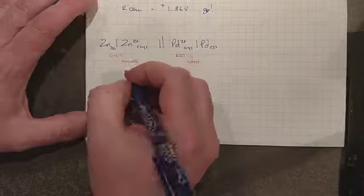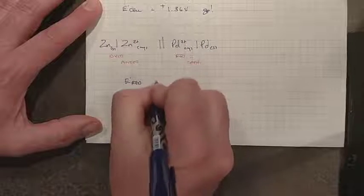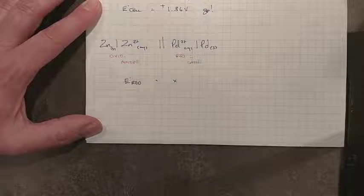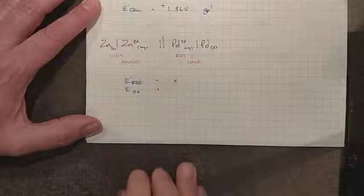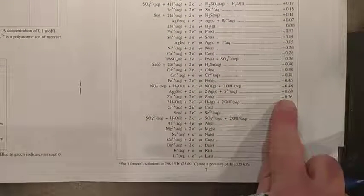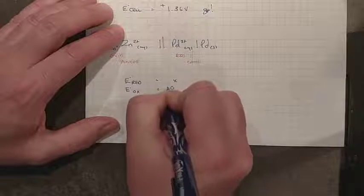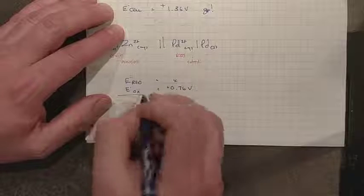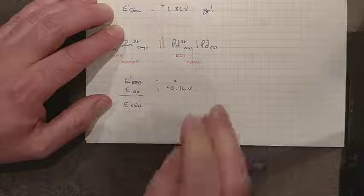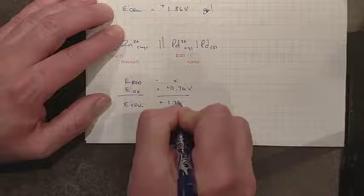So if we go to our little table here, we look for the reduction potential again, and this one is the unknown. We do not know that one—it's what we're trying to solve for. We do have the oxidation. Zinc is on our data table. If you look up zinc, its reduction potential is negative 0.76, so its oxidation potential will be positive 0.76. Now remember, in this question we did give you the total cell potential. It is positive 1.75 volts.